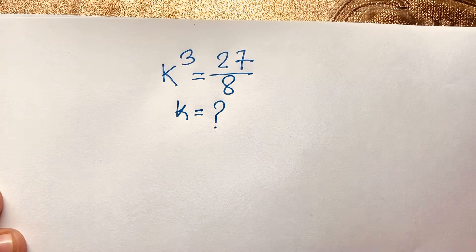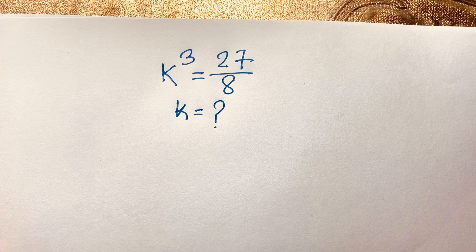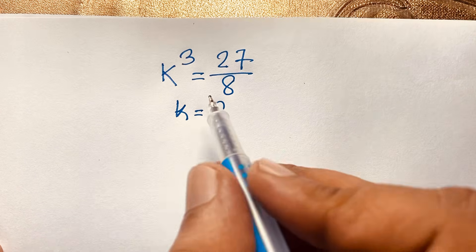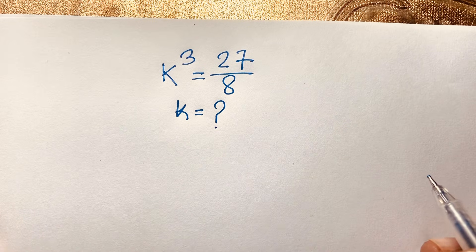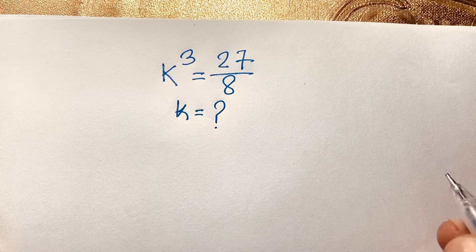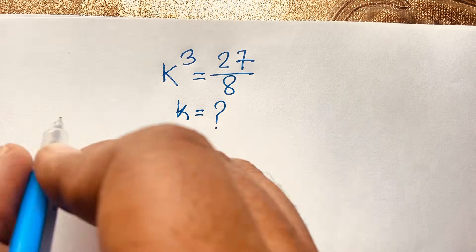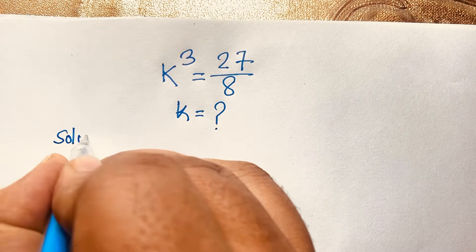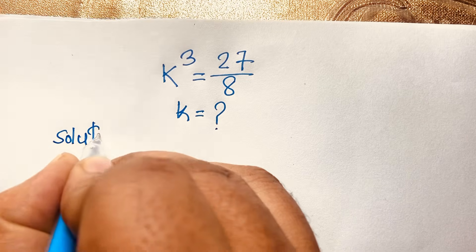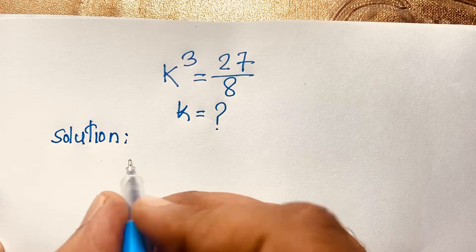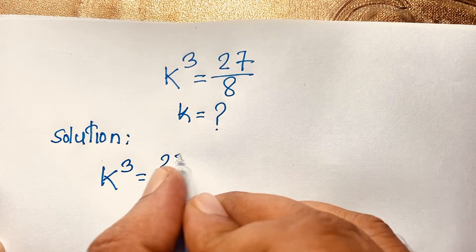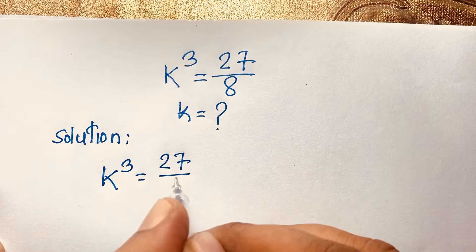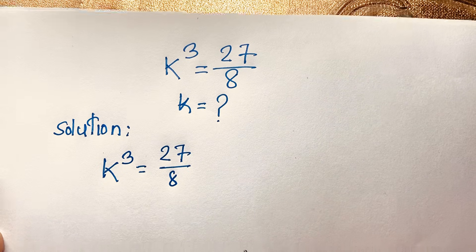Hello everyone. In this video we have solved a nice cubic equation: k to the power 3 is equal to 27 over 8. K is equal to what? How to solve this interesting math problem. So first of all, the solution: k to the power 3 is equal to 27 over 8 — this is our question.